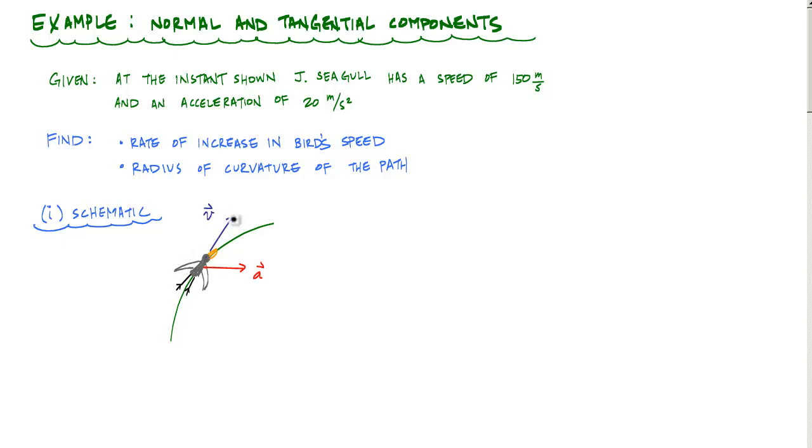At the instance shown, this bird, Jay Siegel, has a speed of 150 meters per second. And the direction of the velocity vector is at an angle of 60 degrees from the horizontal. And the acceleration vector is towards the right of 20 meters per second squared. And what we want to find is the rate of increase in the bird's speed and the radius of curvature of the path.